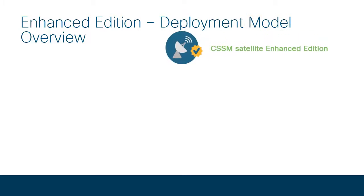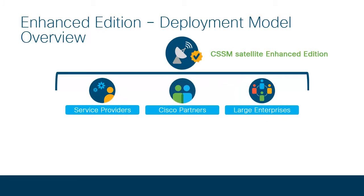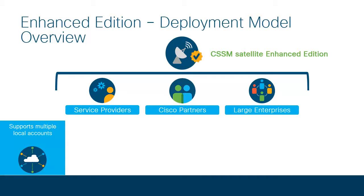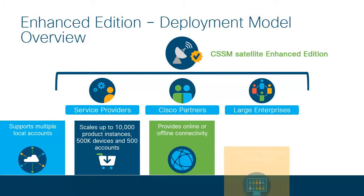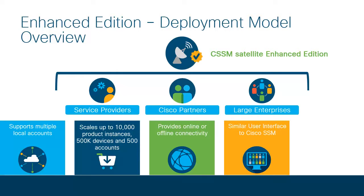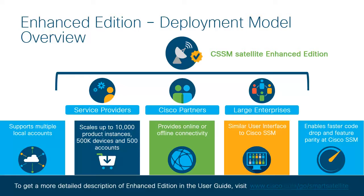CSSM Satellite has a deployment model called the Smart Software Manager Satellite Enhanced Edition. The Enhanced Edition is primarily targeted for service providers, Cisco partners, and large enterprises who want the ability to manage their own and/or multiple customer accounts on a single portal — a term called multi-tenancy. Through its new architecture and more robust management capabilities, it scales up to 10,000 product instances, 500k devices, and 500 local accounts, and provides online or offline connectivity. Enhanced Edition uses the same code base as Cisco SSM, with a similar look and feel, faster code drop, and feature parity. For more detail, visit www.cisco.com/go/smartsatellite.